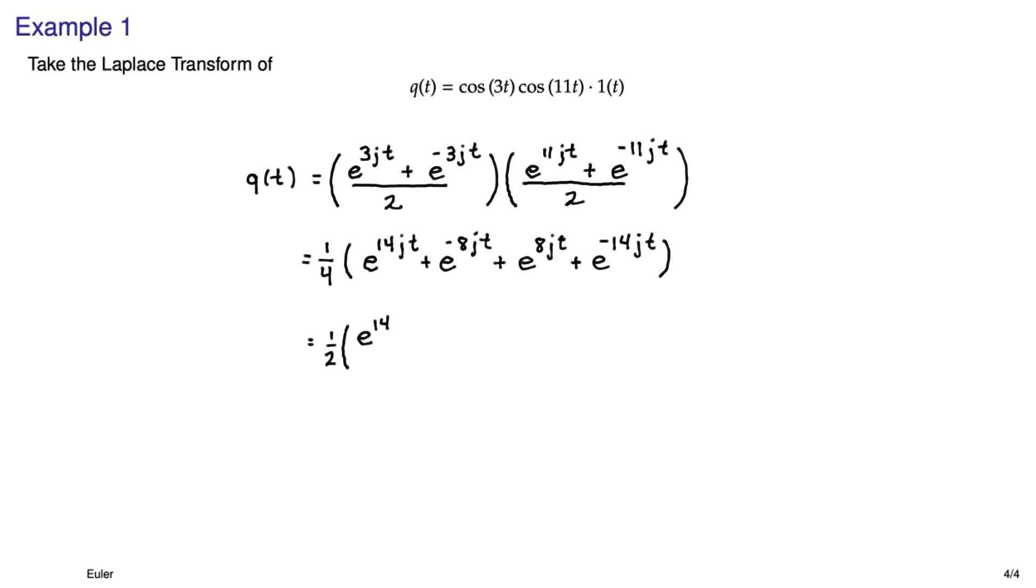Now we just have to rearrange that so it looks like the form that we had on the previous page I think it was equation 2. So we can see that we have these 14jt terms and 8jt terms and fortunately they're beautiful little cosine expressions. So we can go straight to the function of time where now we've gone from products of cosines to sums of cosines.